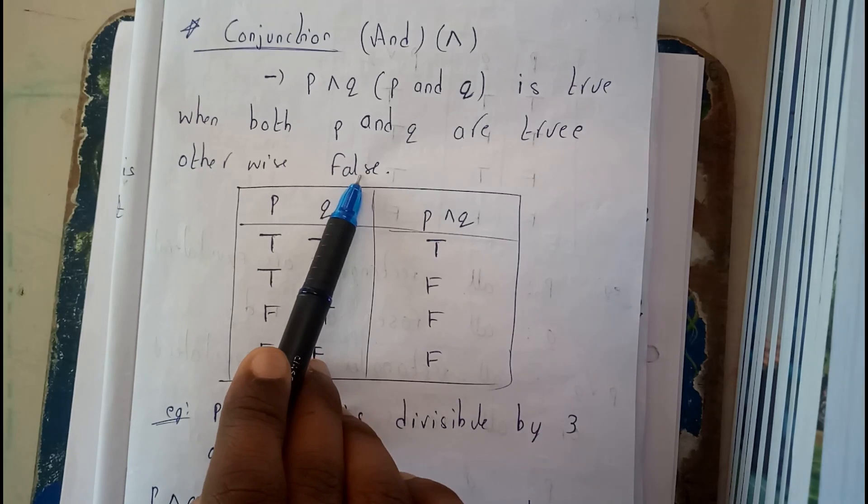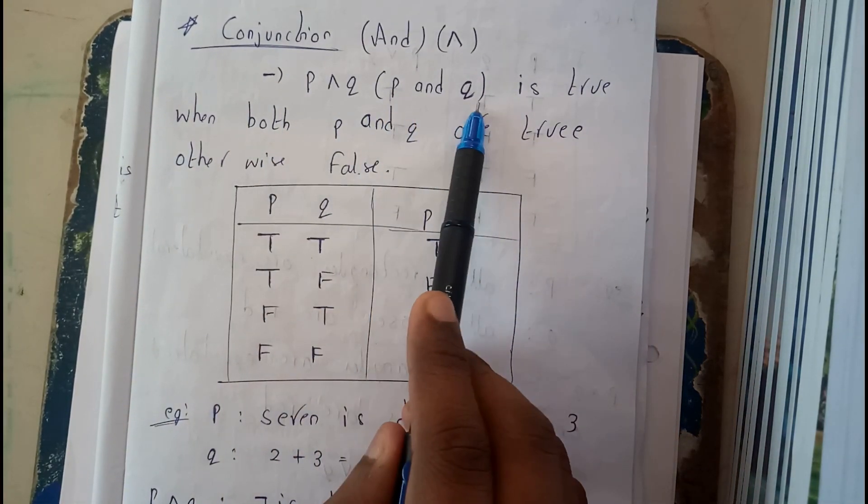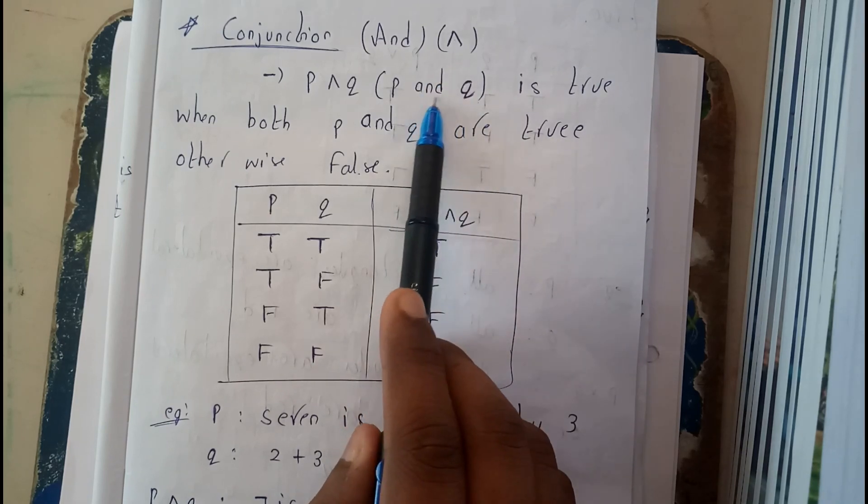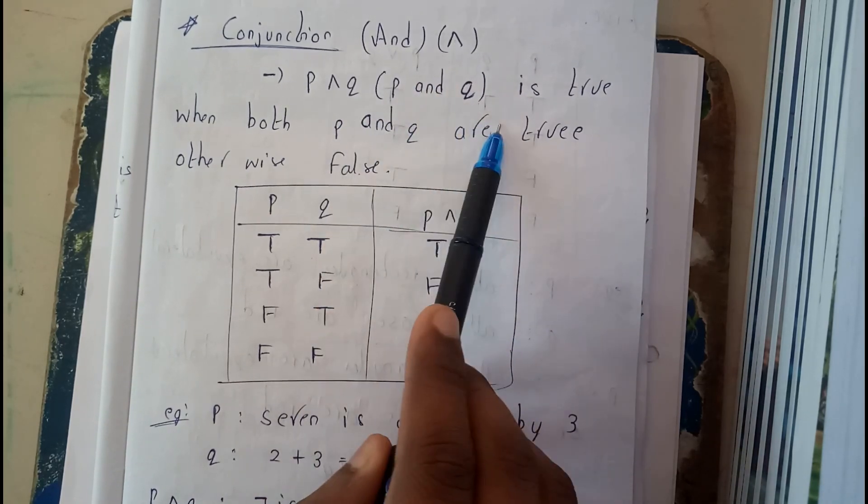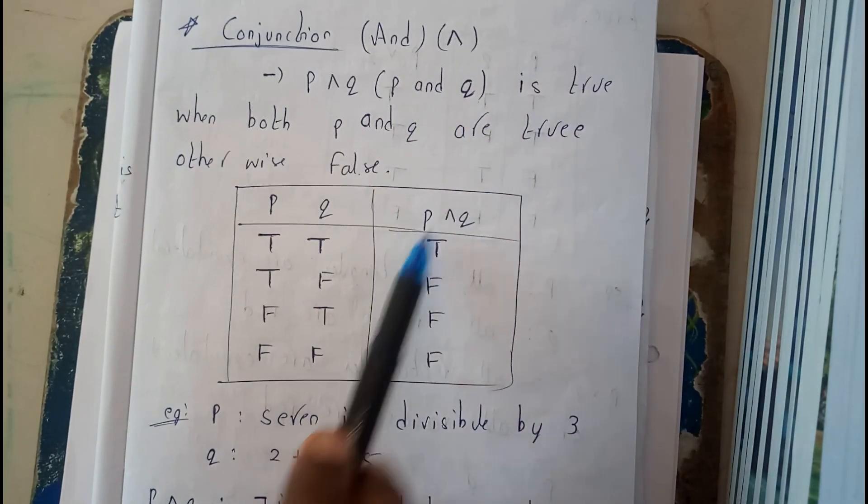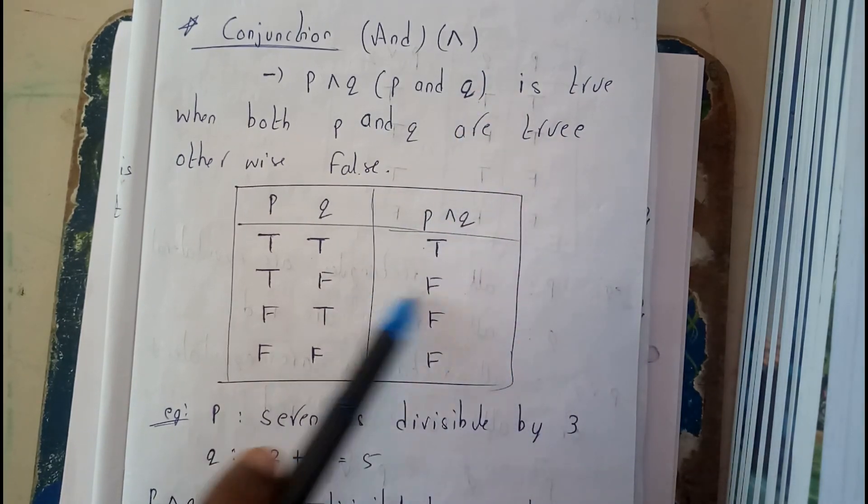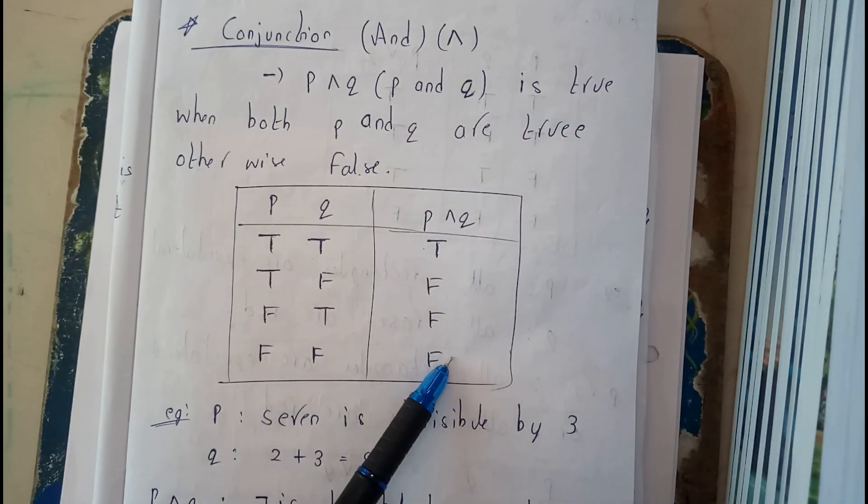You can remember it in a simpler way: P and Q is 'and', so if both are true then the result is true. If any one of them is false, then the result is false. I hope everyone understood this.